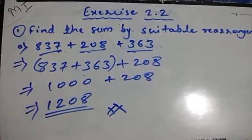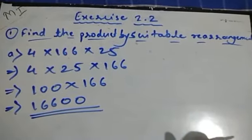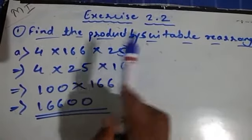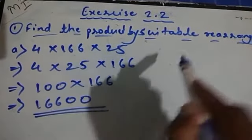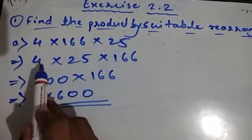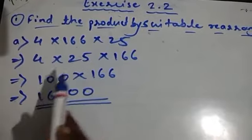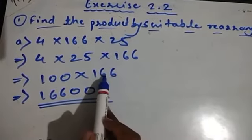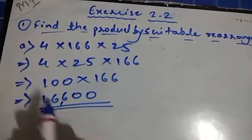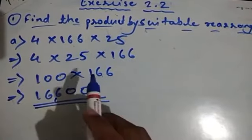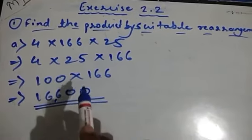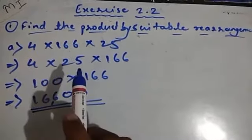Now let's see the next question: find the product by suitable rearrangement. One example is given: 4 × 166 × 25. If you start multiplying 4 with 166, you have to use the long multiplication method. Instead, we take 4 and 25 separately — changing the order — and keep 166 aside. 4 × 25 is 100, and then multiplying 166 with 100 gives 16,600. This makes the problem very simple.